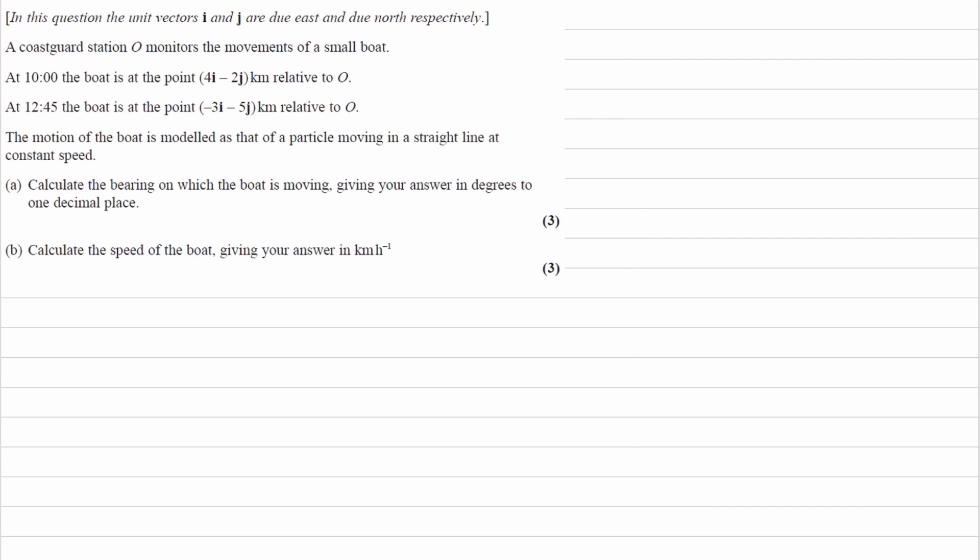So then what we can do is call this position A and call this position B. The position vector OA is (4, -2), and the position vector of B, OB, would be (-3, -5).